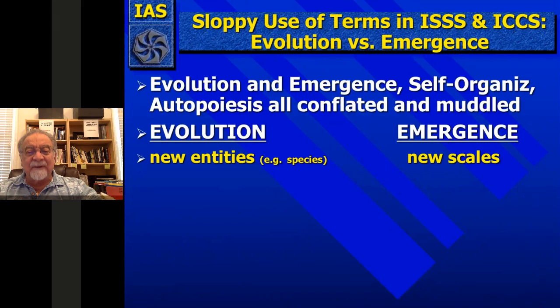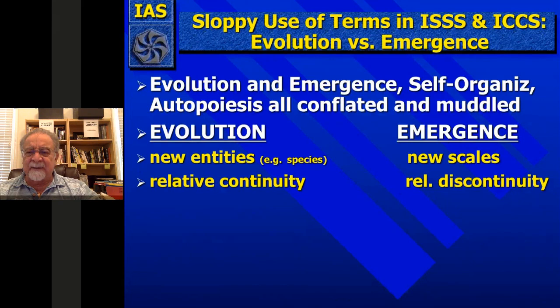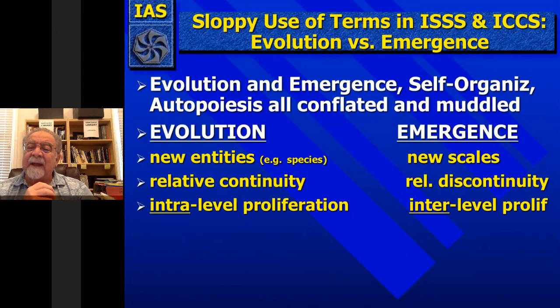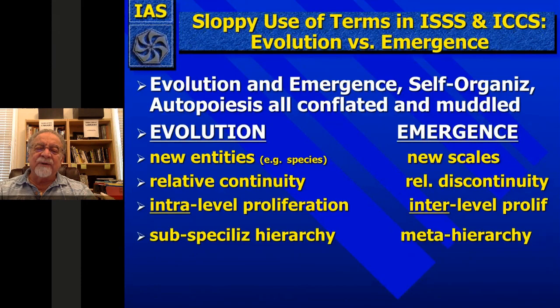I attack the sloppy use of terms in ISSS and the International Conference on Complex Systems — they keep mixing up evolution and emergence and muddle it with self-organization and autopoiesis. Remember: evolution comes up with new entities, just differences in the body plan — species — while emergence gives rise to new scales. In evolution there's relative continuity, especially in microevolution. In emergence there's a huge discontinuity because they are a new scale with a gap between them. Evolution is intra-level proliferation; emergence is inter-level proliferation.